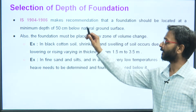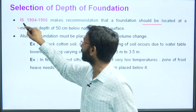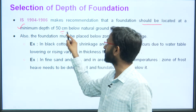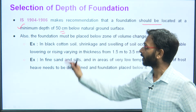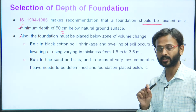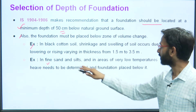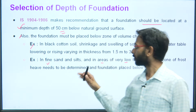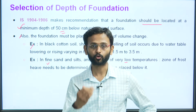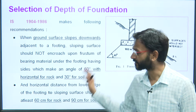IS 1904 recommends that a foundation should be located at a minimum depth of 50 centimeters below the natural ground surface. Second, the foundation must be placed below the zone of volume change — as discussed, this applies both to black cotton soil and to fine sand and silt in areas of very low temperature where freezing and thawing conditions exist, because the zone of frost heave needs to be determined.